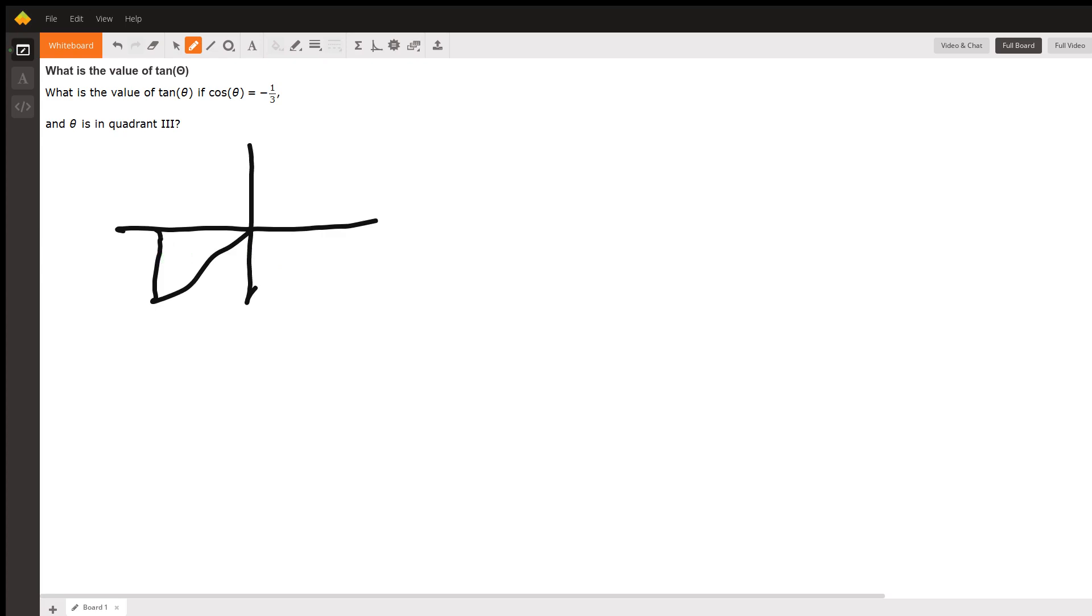Sorry for the—you get the idea though, it doesn't have to be exact. All right, and if cosine is negative one over three, cosine is the adjacent over the hypotenuse.